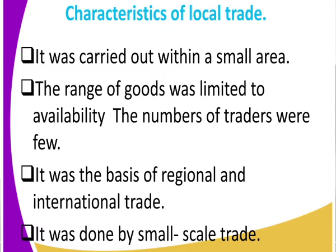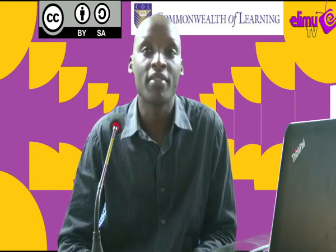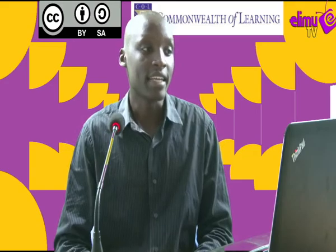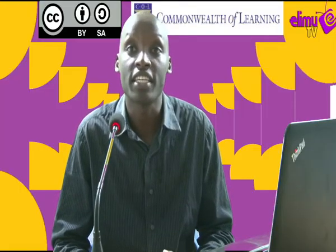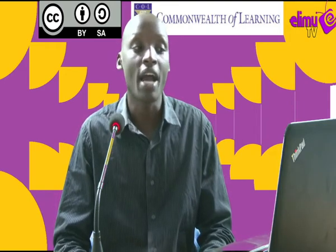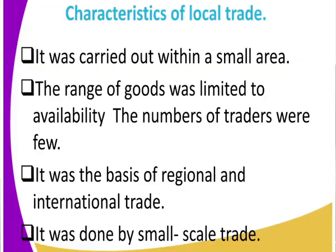The first characteristic of local trade is that it was carried out within a small area — it is carried out in the village. Another characteristic is that the range of goods was limited to availability. What does that mean? What you had is what you could trade. For example, if I had bananas and beans, that is what I would trade. So trade was limited to the availability of goods, and the number of traders in local trade were always few.